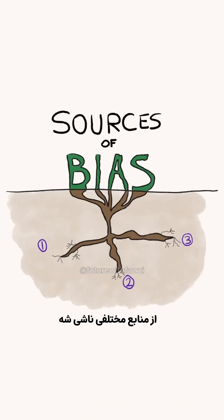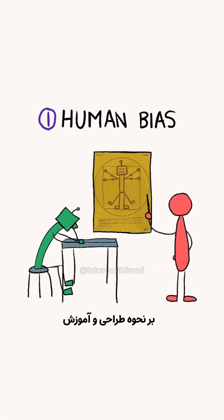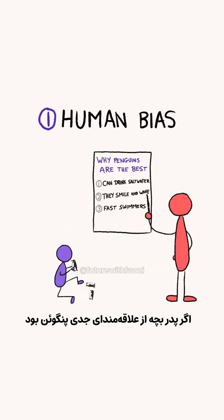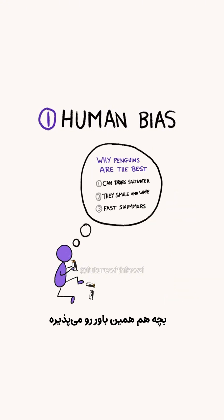And this bias can come from different sources. First, the beliefs and values of people can influence how AI systems are designed and trained. If the child's father was an avid penguin enthusiast, he might constantly talk about how penguins are the best animals on Earth. The child would adopt the same belief because it's all they've been exposed to.